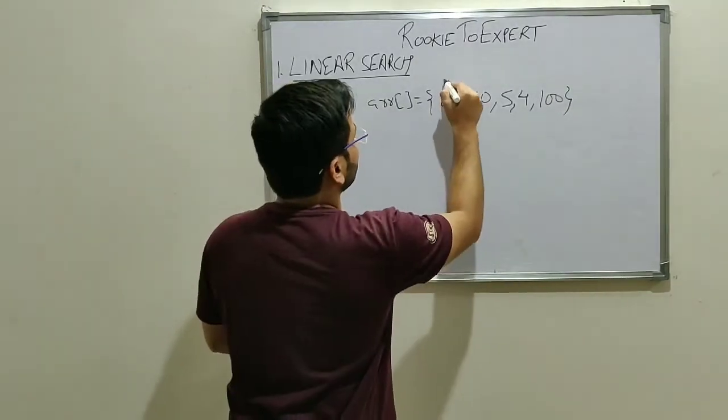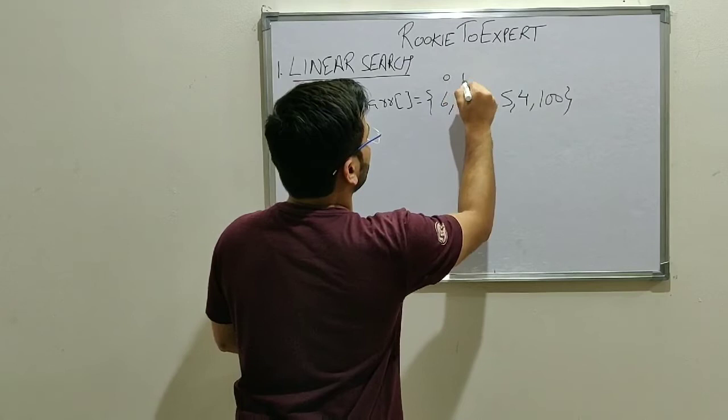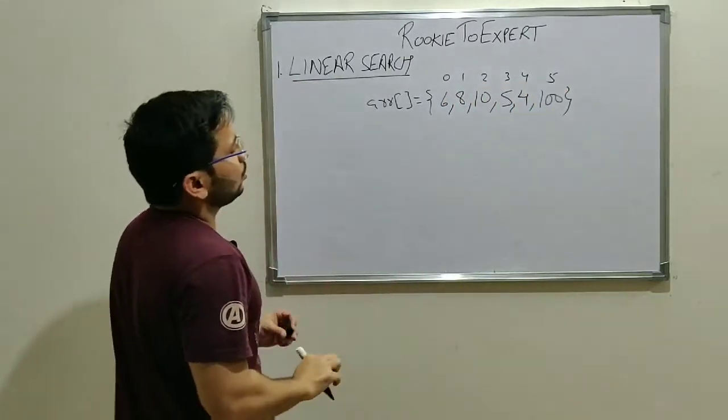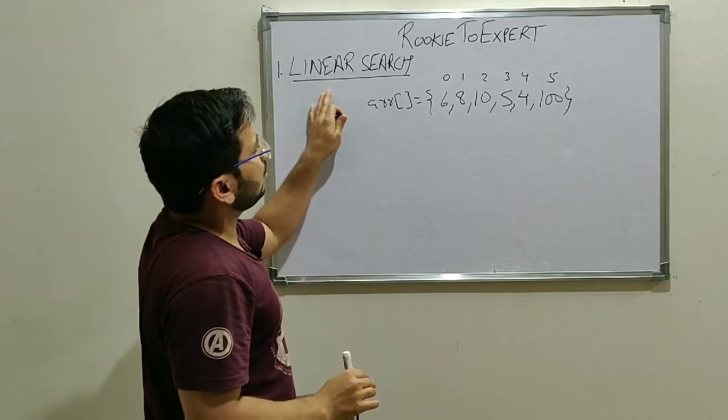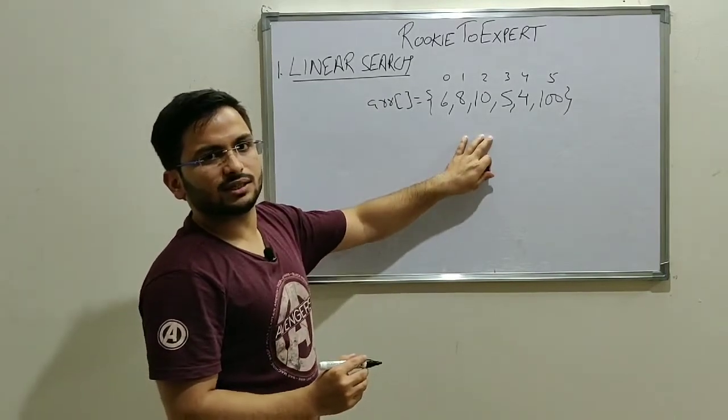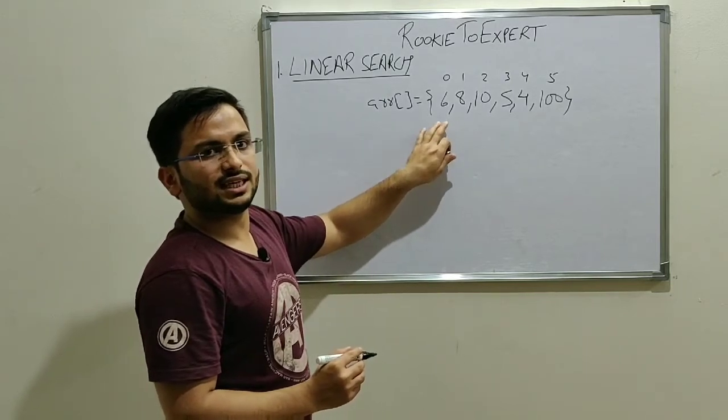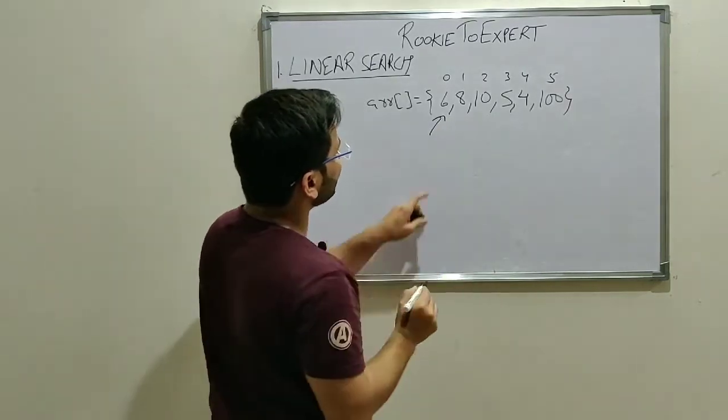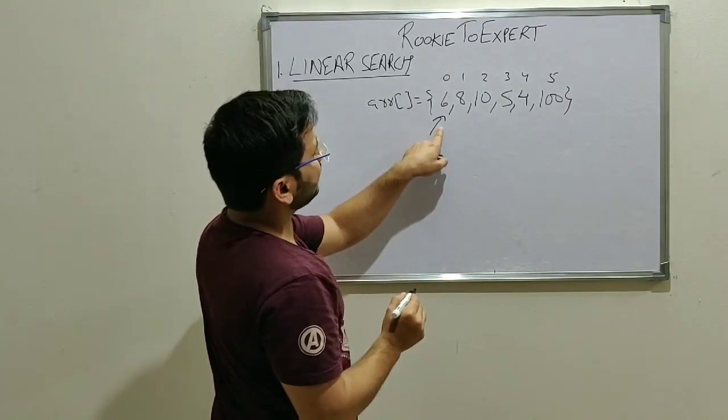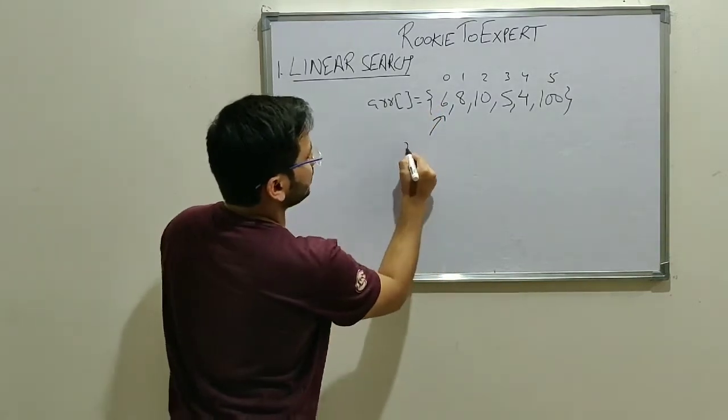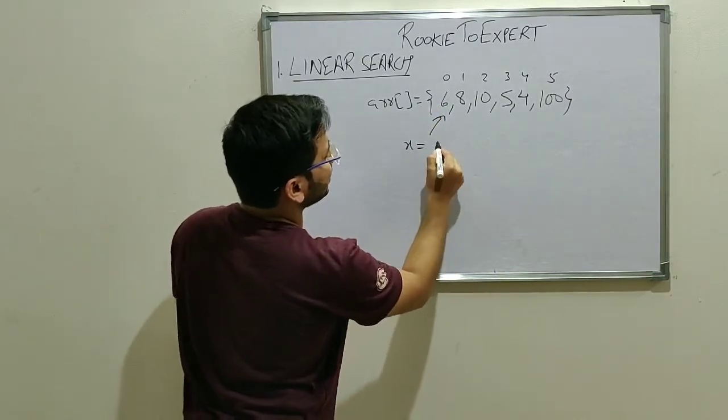So in this array, this is the index 0, 1, 2, 3, 4, 5. Now, what we'll do in linear search, we'll take a loop and we'll go through each element one by one and see if the element is present in the array or not. So first, we'll go to the first element. We see if the current element is equal to the element to be searched. Let's say the element to be searched is x and that is 5.